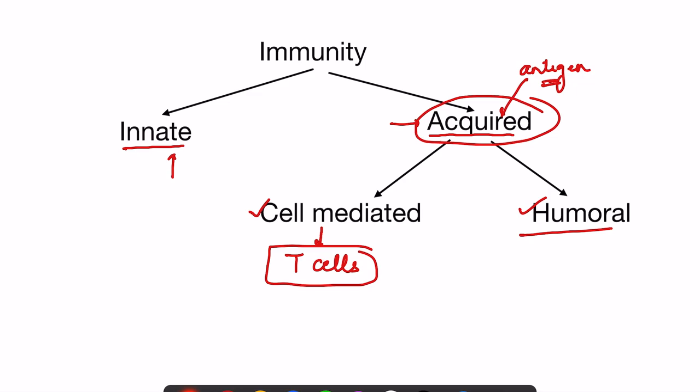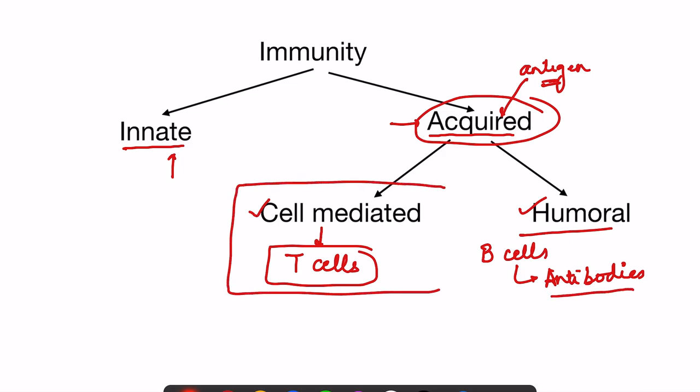In humoral immunity, B cells sit in lymphoid organs and do not travel through the blood searching for foreign agents. Instead, they release antibodies which circulate — that is why it is called humoral immunity. In this video, we will focus on the details of cell-mediated immunity.